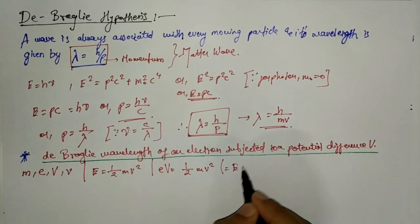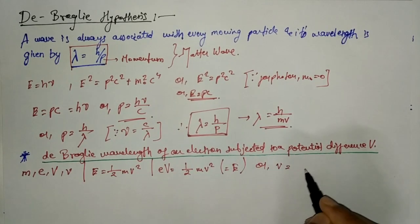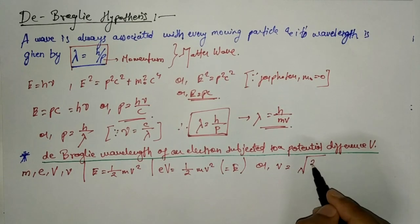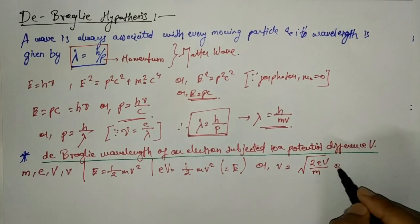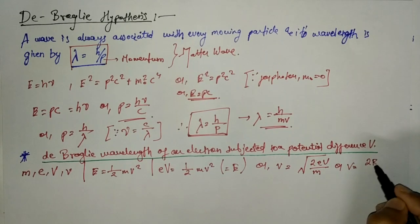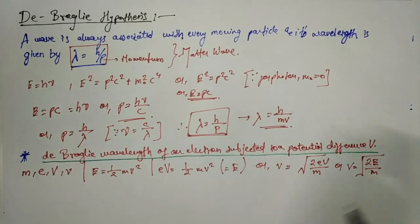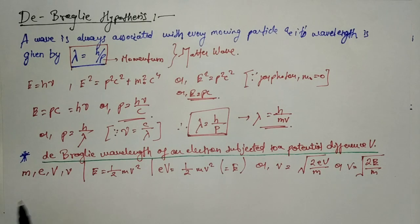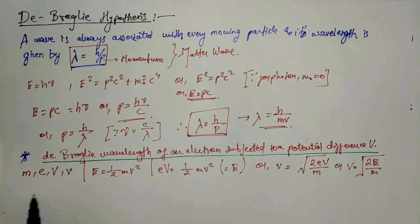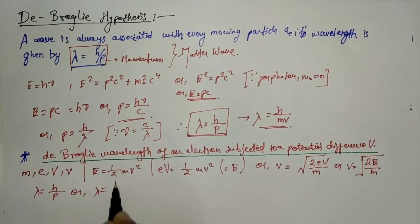We can write eV = ½mv², and therefore v = √(2eV/m). Since lambda = h/p = h/mv, we substitute the expression for v to find the De Broglie wavelength in terms of the potential difference V.